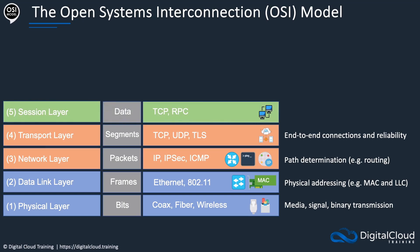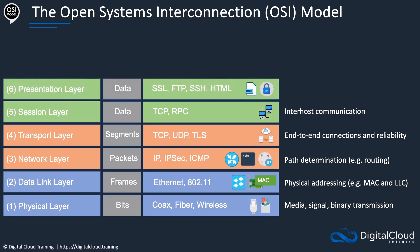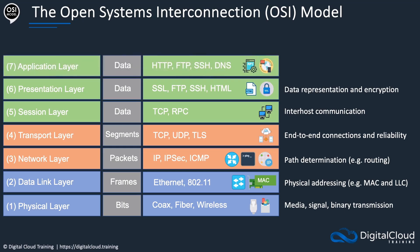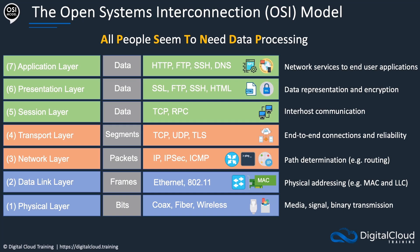At layer five, we have the session layer, with TCP and remote procedure call (RPC) — inter-host communication happening here. The presentation layer deals with data representation and encryption: SSL, FTP, SSH, and HTML. Layer seven is the application layer — HTTP, FTP, SSH, and DNS — providing network services to end-user applications. HTTP of course is web servers; the internet is based on HTTP, so at layer seven we have information about those particular HTTP requests. One mnemonic to remember all seven layers: 'All People Seem To Need Data Processing' — Application, Presentation, Session, Transport, Network, Data Link, Physical.